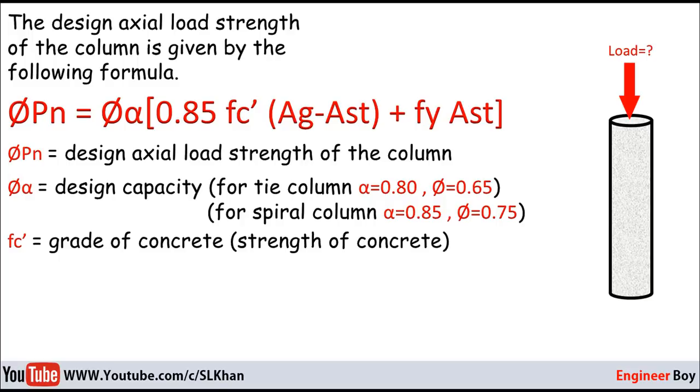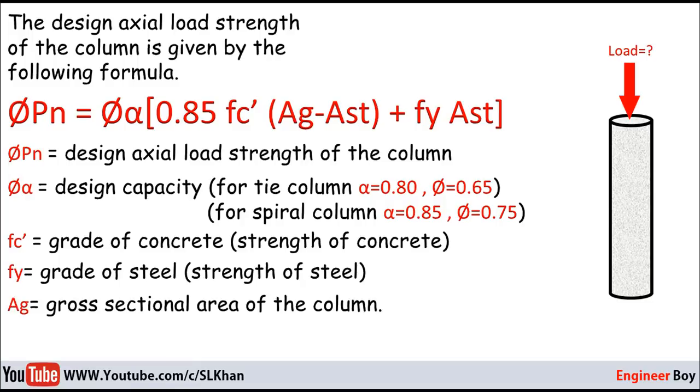fc' is the grade of concrete or strength of the concrete, and fy is the grade of steel or strength of the steel. Ag is the gross cross-sectional area of the column, and Ast is the area of steel in section.